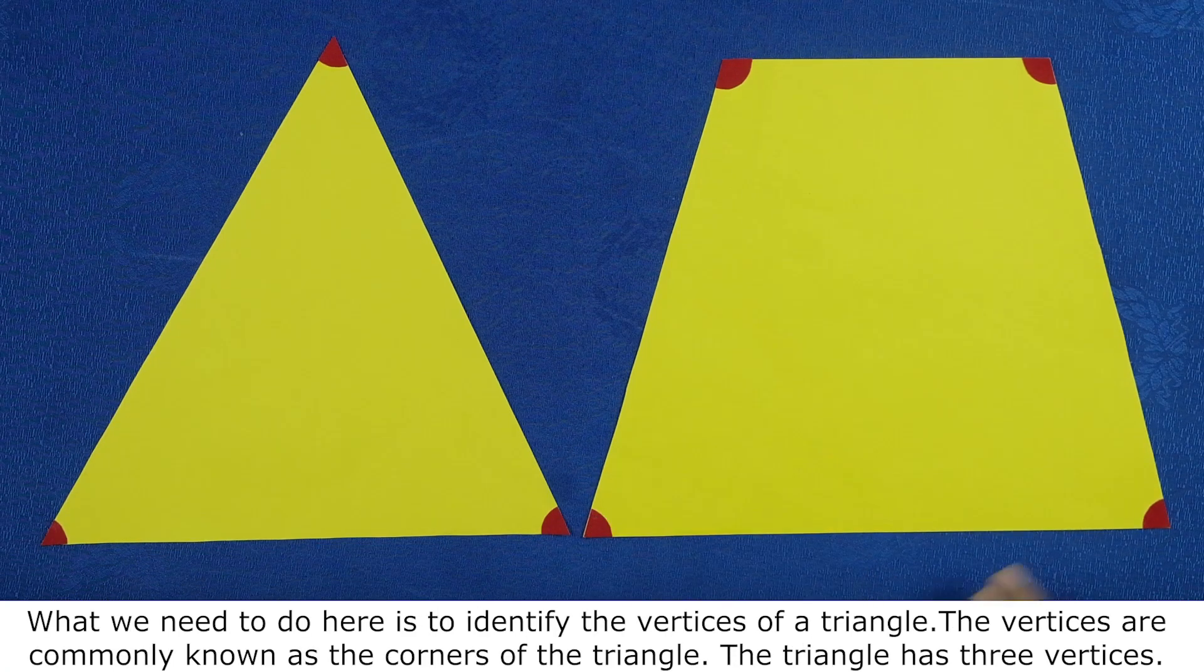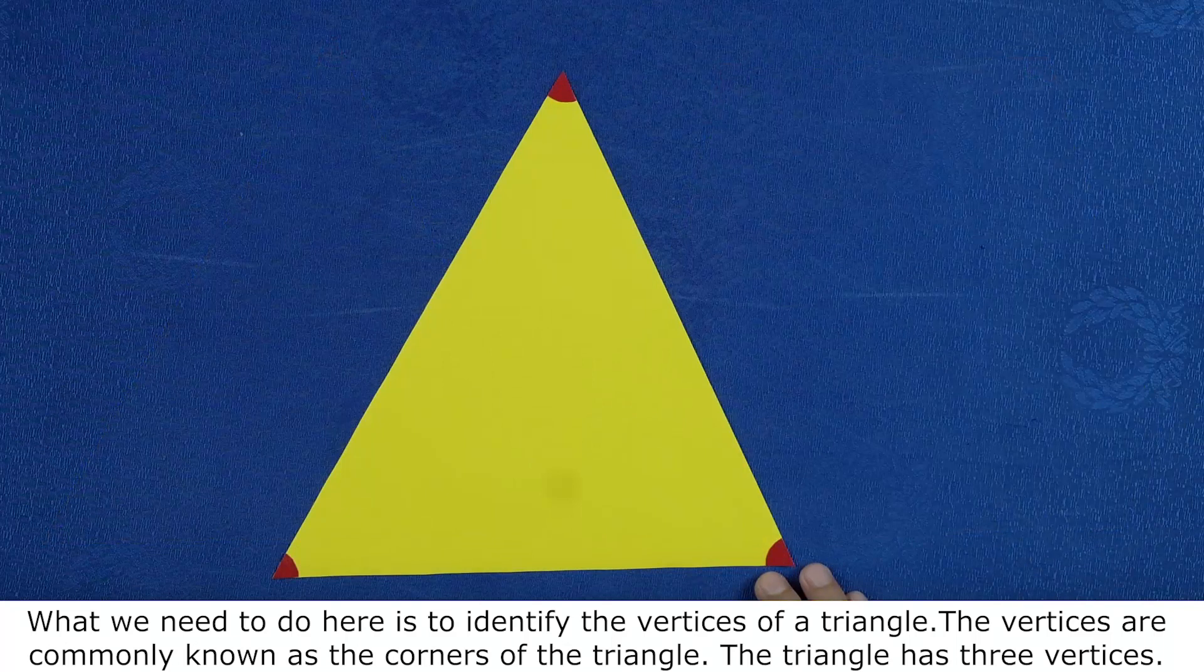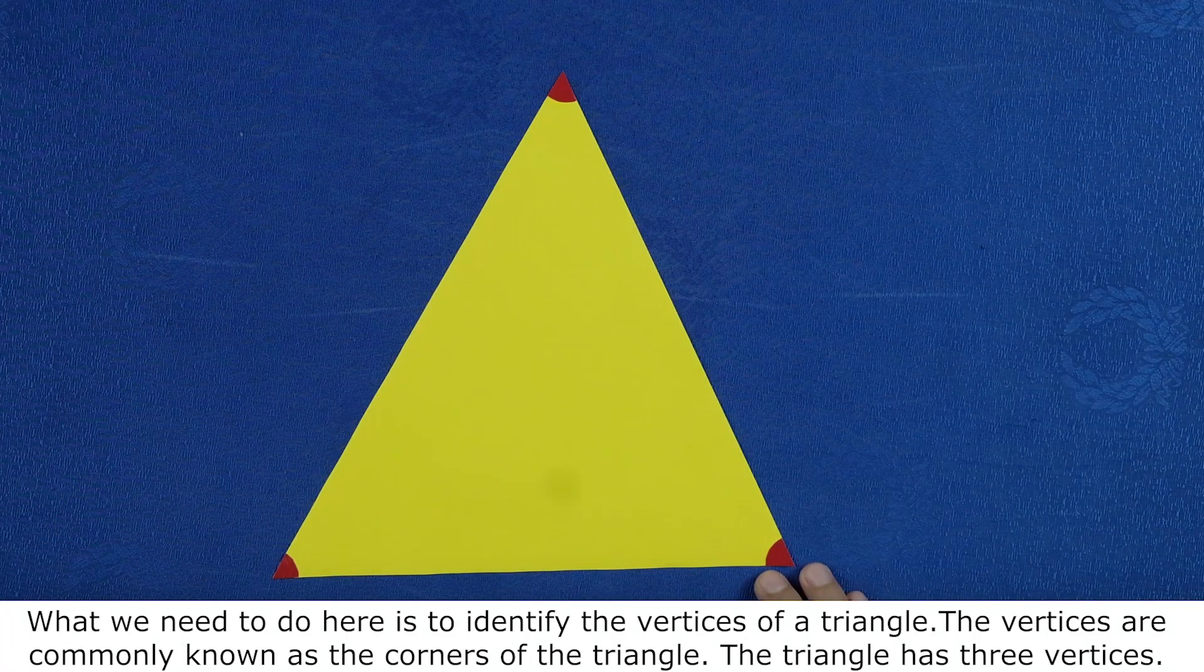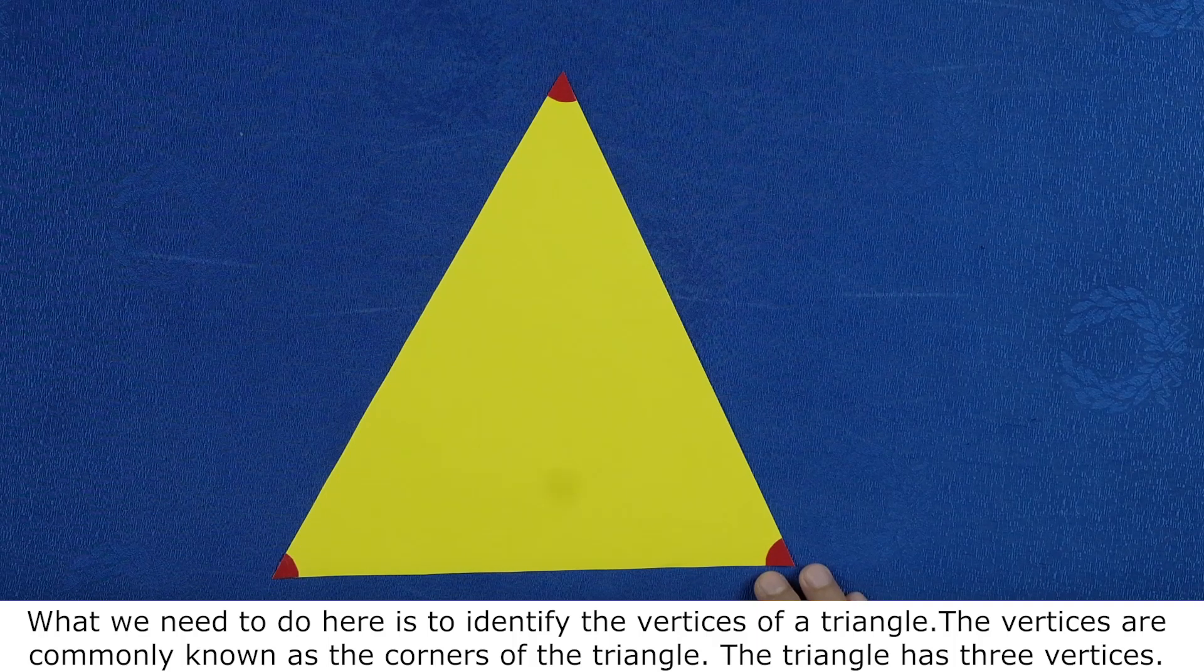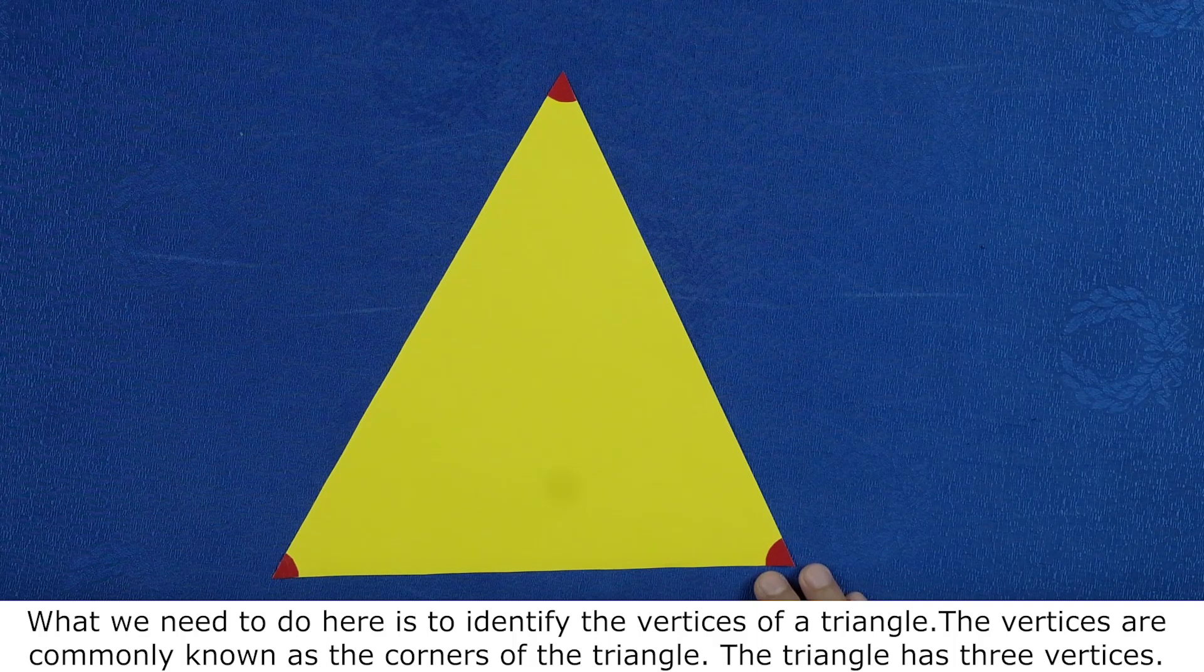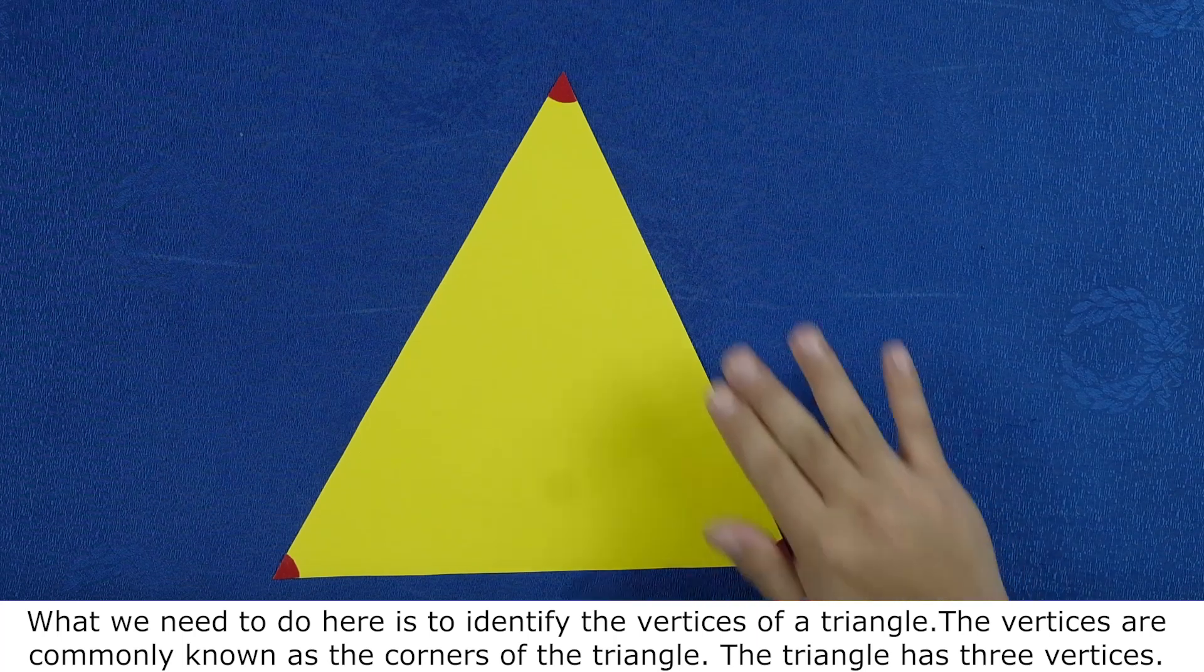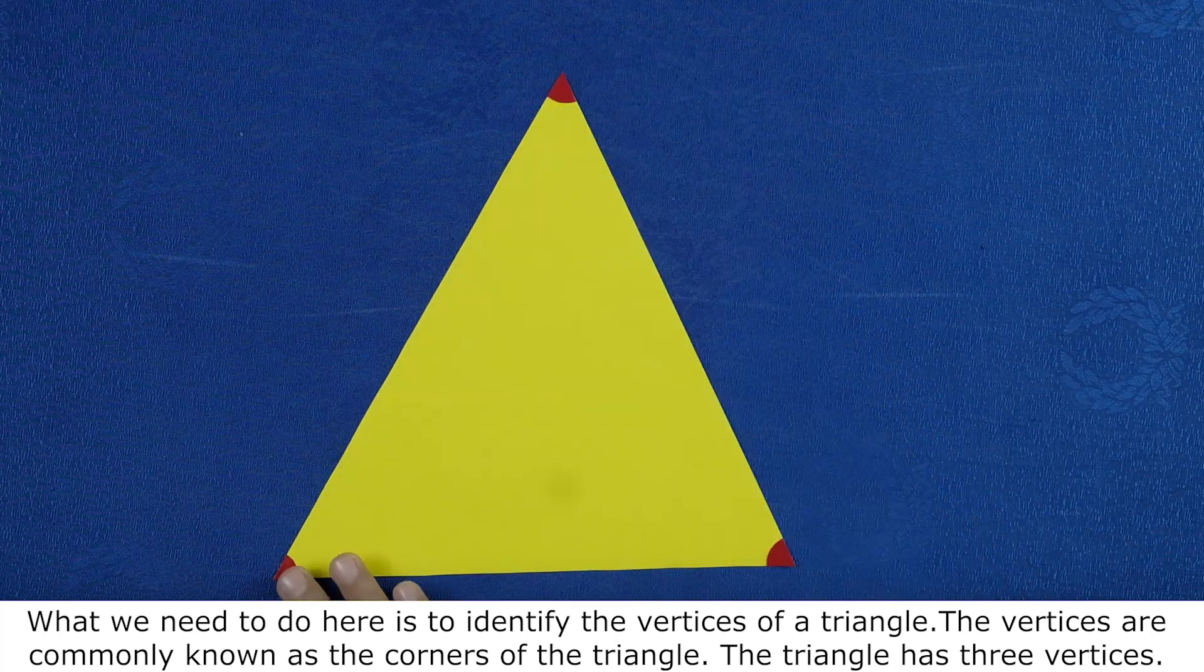Let's start first with the triangle. What we need to do here is to identify the vertices of a triangle. The vertices are commonly known as the corners of a triangle. The triangle has three vertices: one, two, and three.